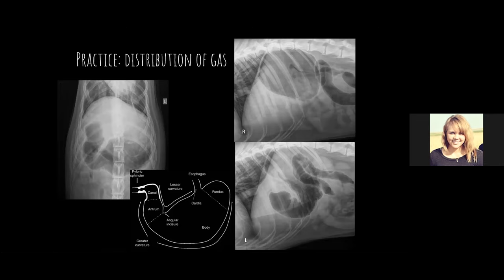Gas can redistribute, and the most obvious example is in the stomach. The stomach has a fundus where the esophagus enters, a big body, and the pylorus. Whether the dog is on its right or left side, gas redistributes because sometimes we have gas, sometimes fluid, sometimes a mixture. On a right lateral, gas rises into the fundus; on a left lateral, it rises into the pylorus.